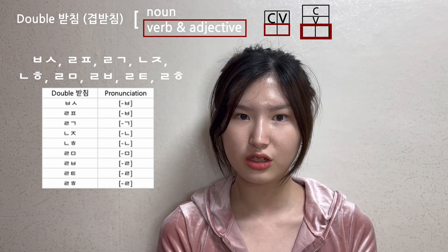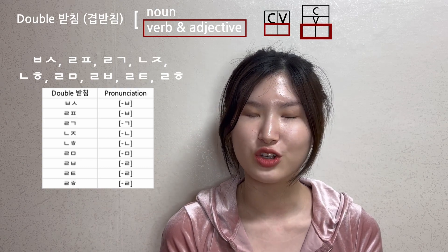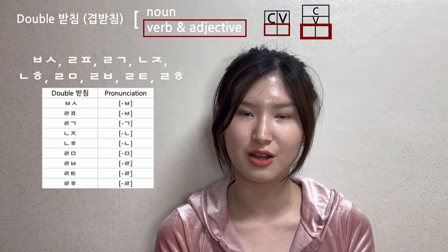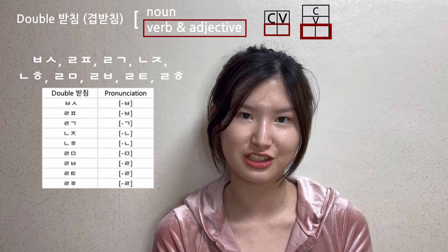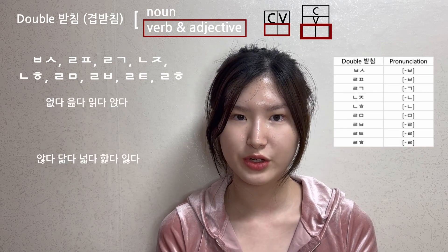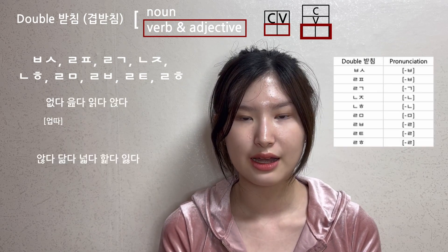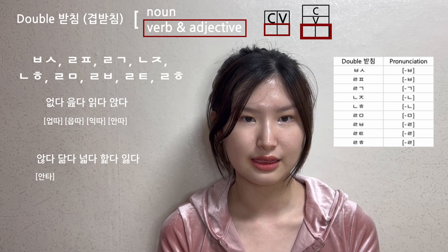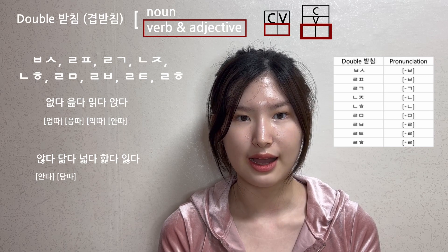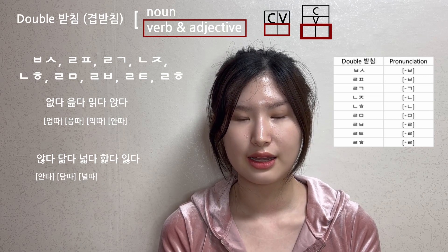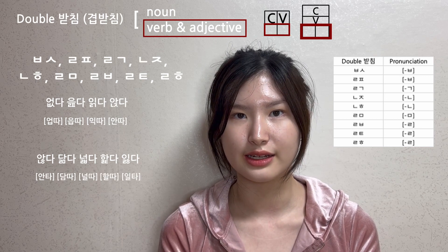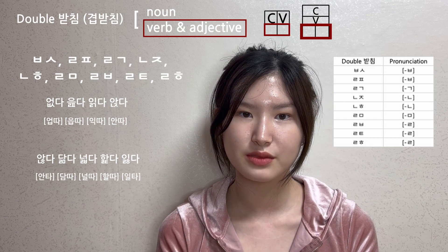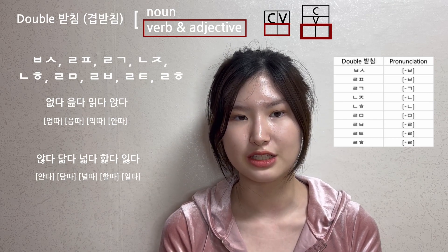In the case of verbs and adjectives, there are nine double patchim. Only one consonant in the double patchim is pronounced when it's on its own or when a consonant comes after the double patchim. As shown in this chart, these are the consonants that are pronounced.